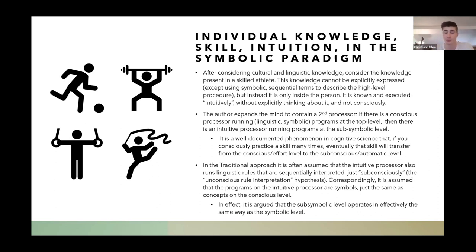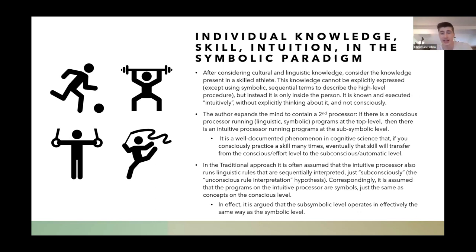If you consciously practice something many times, that skill will transfer from the conscious level to the subconscious automatic level and you'll be able to do it without even thinking about it. In the traditional approach, it's assumed the intuitive processor also runs on linguistic rules that are sequentially interpreted subconsciously. Correspondingly, it's assumed the programs on the intuitive processor are also symbols, just like concepts on the higher processor. Classic AI basically argues that the sub-symbolic level operates in the same way as the symbolic level.